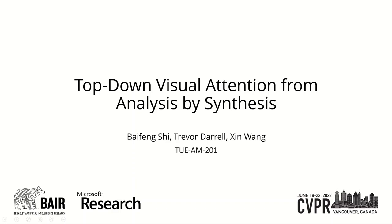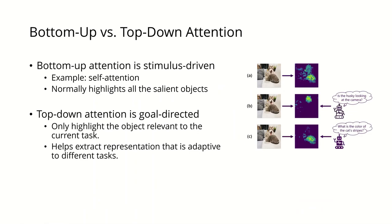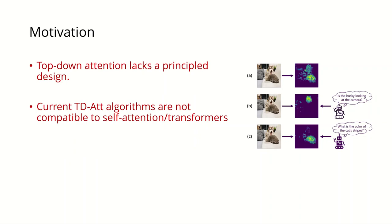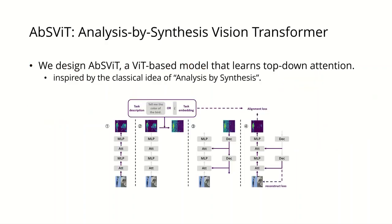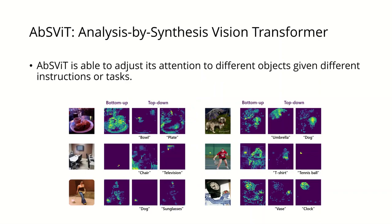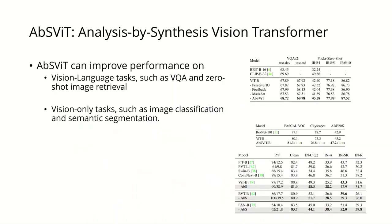This is Bai Kungshu from UC Berkeley, presenting joint work with Trevor Darrell and Xin Wang. This work studies top-down attention, a concept opposite to bottom-up attention. Bottom-up attention is only dependent on the input and normally highlights all salient objects in the image. Top-down attention, on the other hand, is directed by the high-level task and only highlights objects relevant to the task while ignoring others, which helps extract a task-adaptive representation. However, current top-down attention algorithms do not have a principled design and are not compatible with vision transformers. Motivated by this, we propose AppsVIT, a ViT-based model with the ability of top-down attention. We show that AppsVIT can adjust its attention to different objects given different tasks and improves performance accordingly.